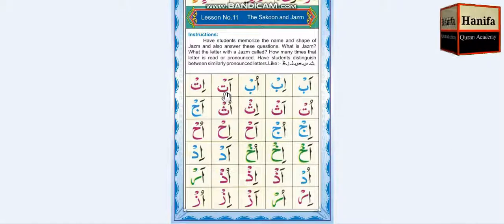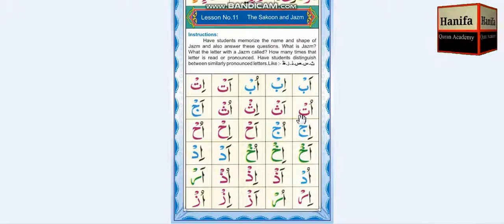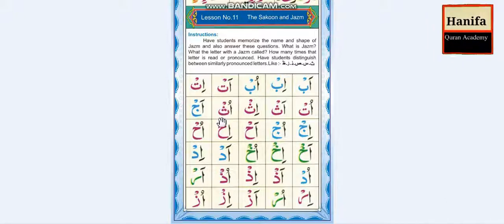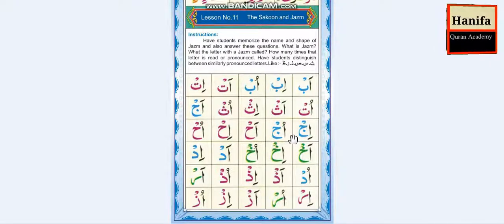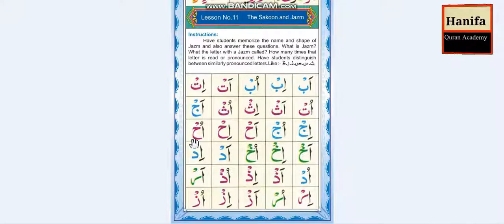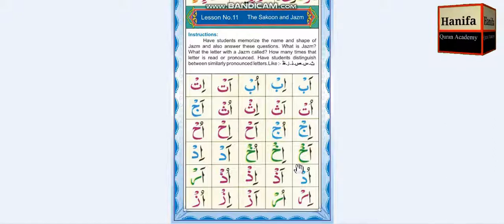Continuing the drill: Hamza, Ta, Damma — Ut. Hamza, Jim, Fathah — Aj. Hamza, Jim, Kasra — Ij. Hamza, Jim, Damma — Uj. Hamza, Ha, Fathah — Ah. Hamza, Ha, Kasra — Ih. Hamza, Ha, Damma — Uh. Hamza, Khaw, Fathah — Akh.